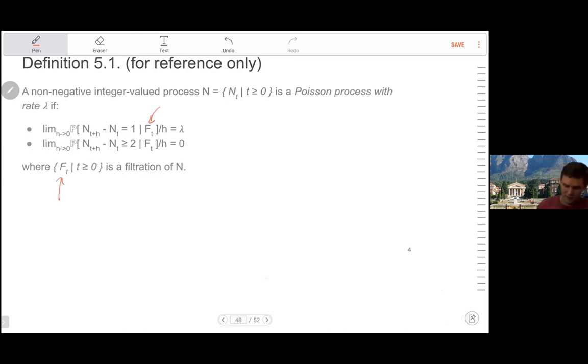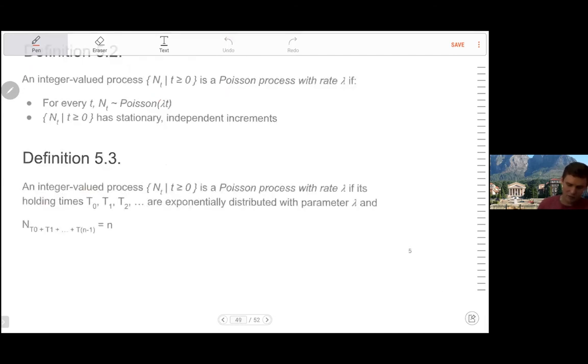So this is a definition. This is one definition of a Poisson process. Here we have two more definitions of also things called Poisson processes, but it's not yet clear that they are all the same thing. So here we say it's an integer valued process as we've had before with rate lambda.